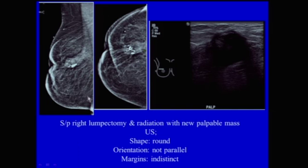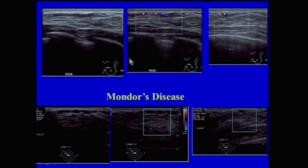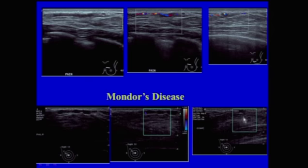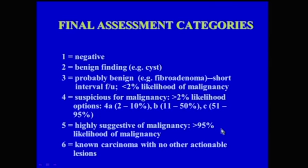Fat necrosis is included in this section. On ultrasound of a patient with a palpable abnormality, you would see an irregular hypoechoic mass suspicious for cancer. However, correlating with the mammogram shows this is the region of the lumpectomy site — she had developed fat necrosis. Mondor's disease is also included: a patient with a palpable abnormality had a partially occluded vein. Another patient had a very dilated beaded-like appearance of a vein with no flow that did not compress — Mondor's disease in two different patients.